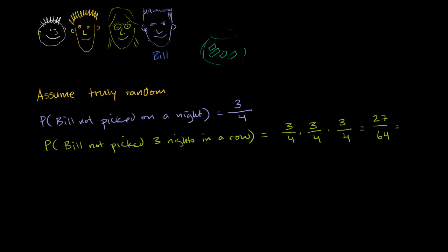So that is equal to 0.42, and this doesn't seem that unlikely. It's a little less likely than even odds, but you wouldn't question someone's credibility — there's roughly a 42% chance that three nights in a row Bill would not be picked. If you're assuming truly random, your hypothesis that it's truly random seems reasonable. There's a 42% chance you would have the outcome you saw if your assumption is true.